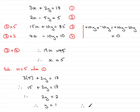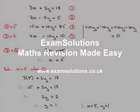To summarize, we have x equals 5 and y equals 1. That brings us to the end of the simultaneous equation. Thank you.